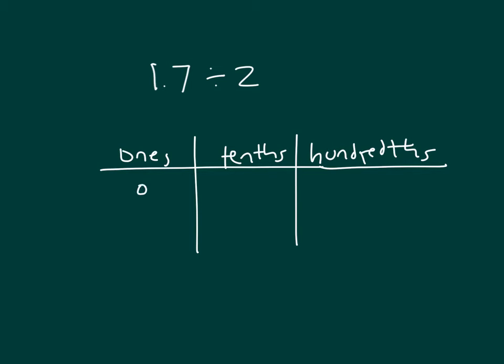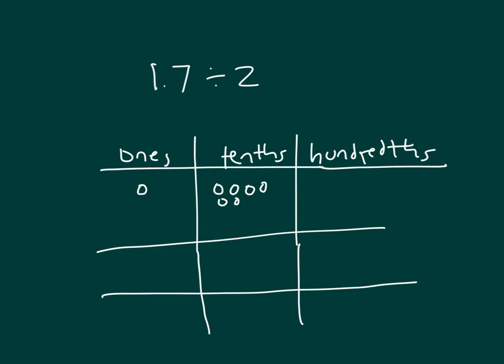Model our number first, and we're dividing it into two groups. Can I divide 1 by 2? Nope. So I have to unbundle it. Unbundle 1, exchange it for ten-tenths.